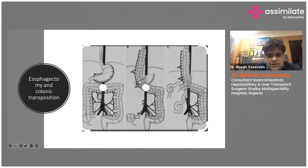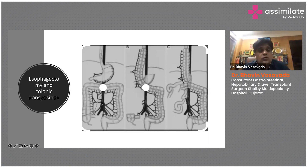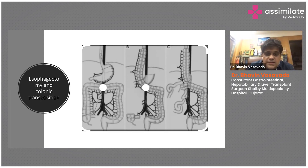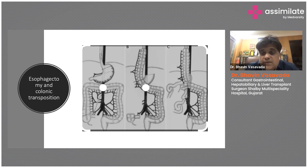We then join the remaining colon to the small intestine. Depending on where we cut, we can use the ascending, transverse, or descending colon. The remaining continuity is restored by either an ileocolic anastomosis — joining the small intestine to the colon — or a colocolic anastomosis, joining large intestine to large intestine. This is why we prefer stomach when possible: with stomach, we only join the upper esophagus to the stomach and the rest of the GI system is undisturbed.